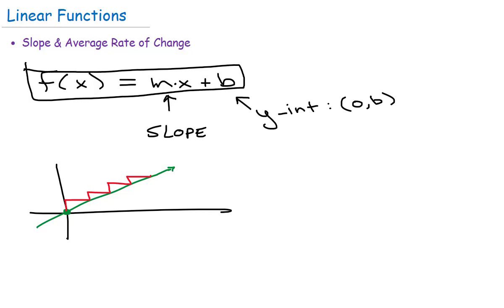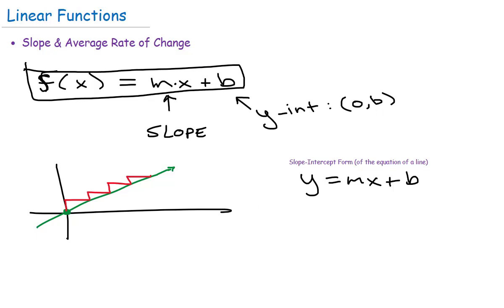We have what's called slope-intercept form. We use f of x for function notation, but a lot of times you might see this as y. So if you see y equals mx plus b, that's called slope-intercept form. This form lets you tell really quickly that the number in front of x represents the slope, and the number at the end represents the y-intercept. That's why it's called slope-intercept form.